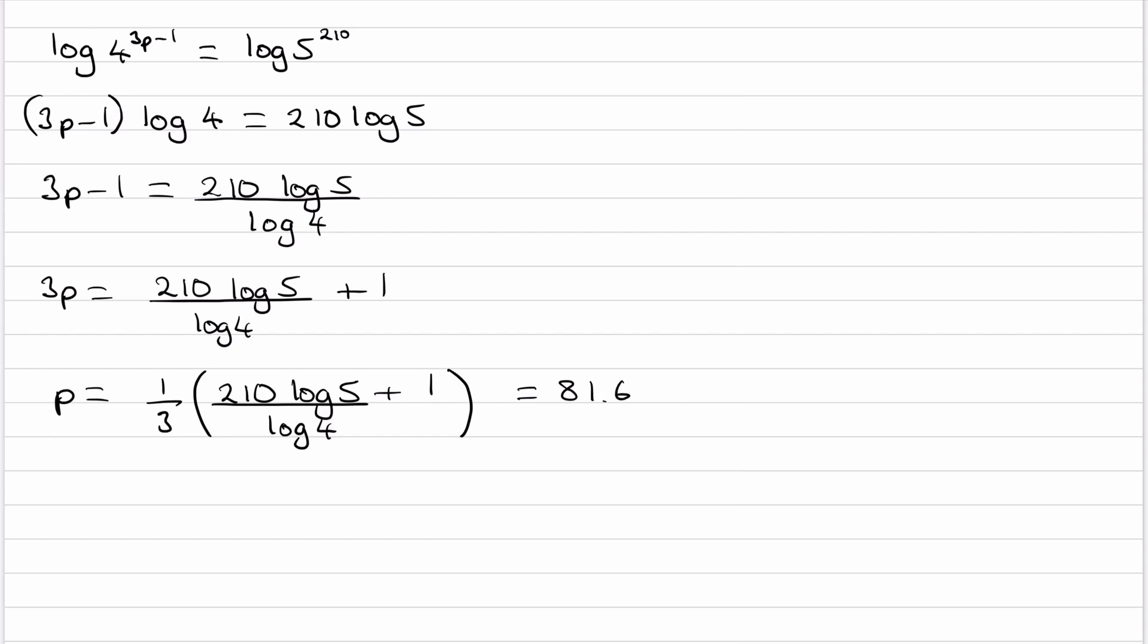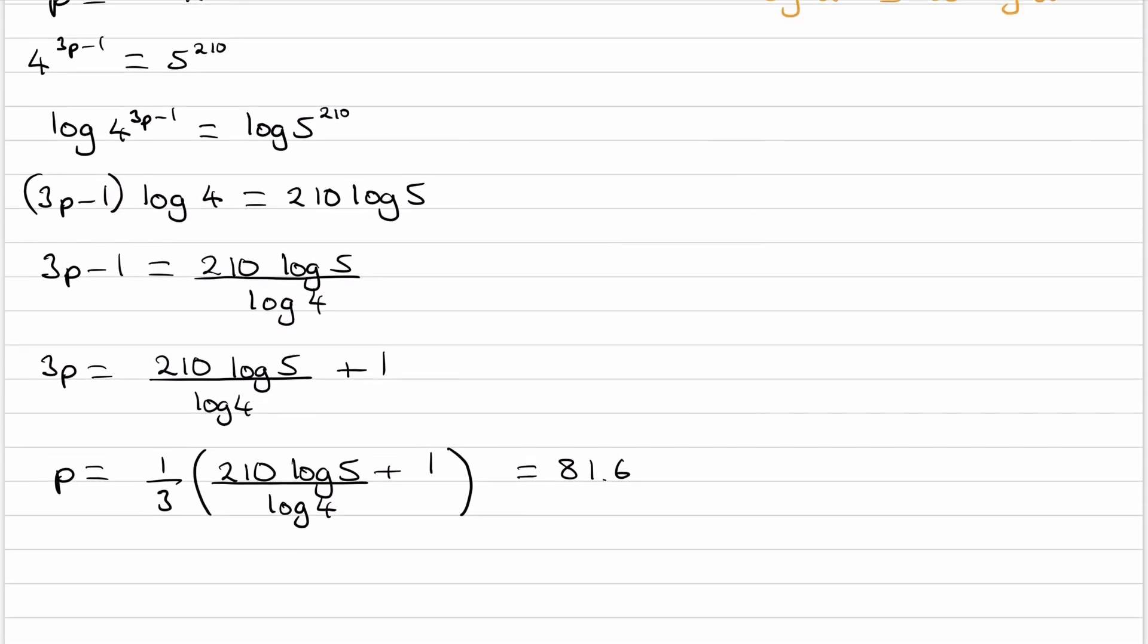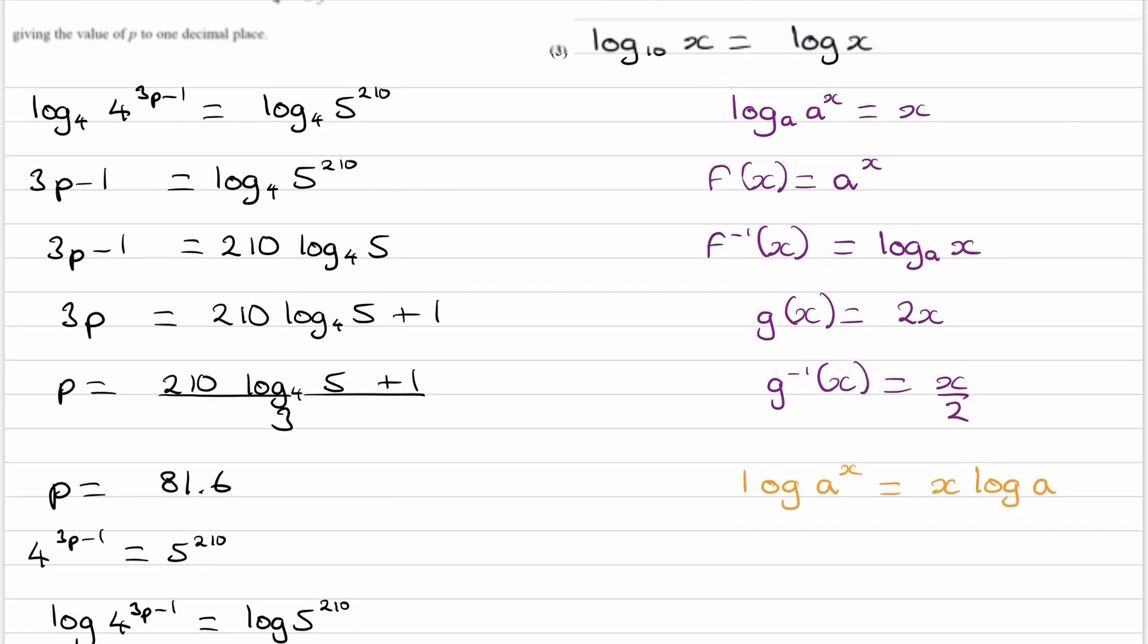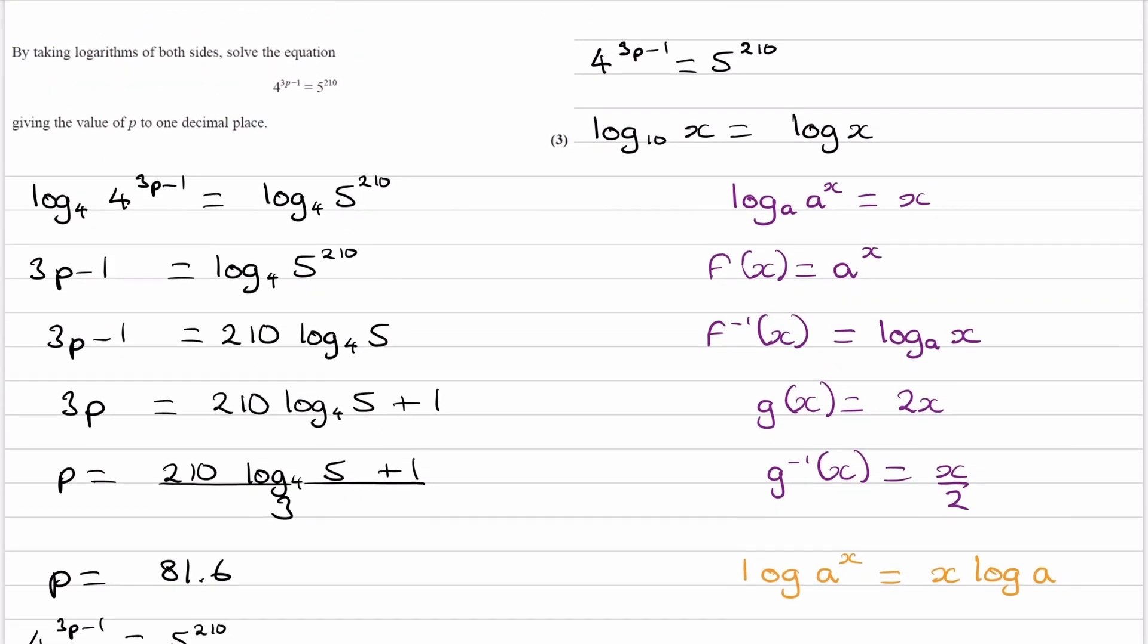So you see how the rearranging in this method is a bit more complex because you have to bring down this power of 3p minus 1. In the first method, you didn't have to do that. The log to the base 4 and the 4 just cancelled out straight away. And then once you're at this stage, you can then just rearrange for p.